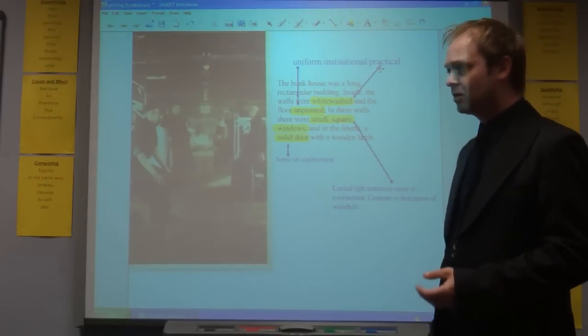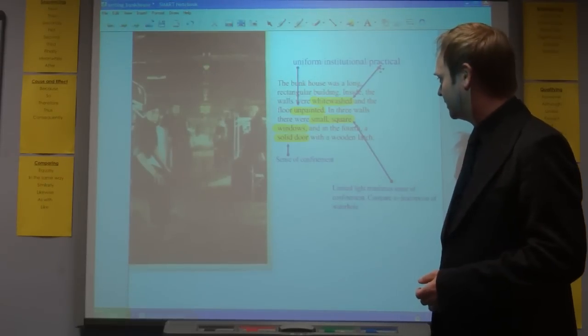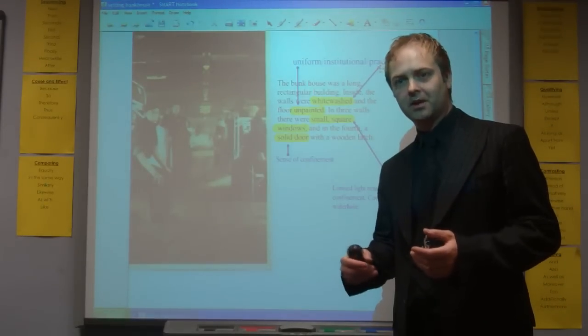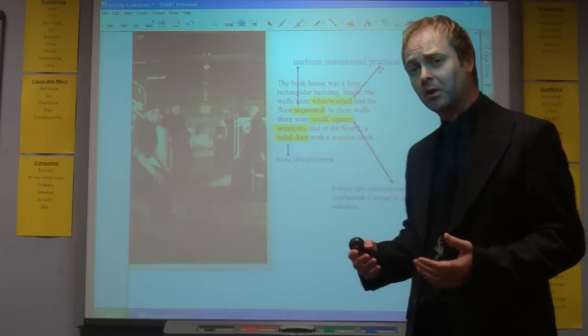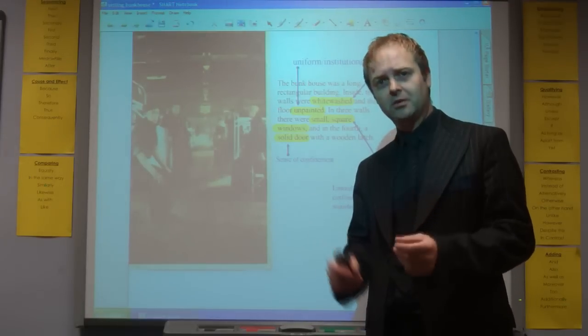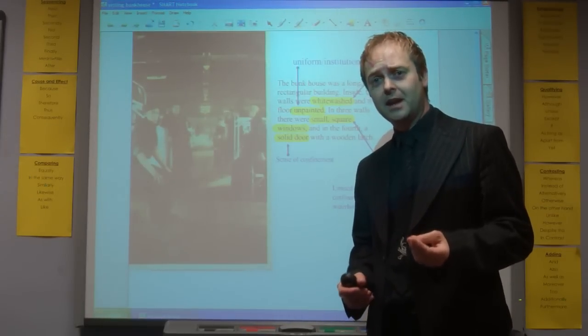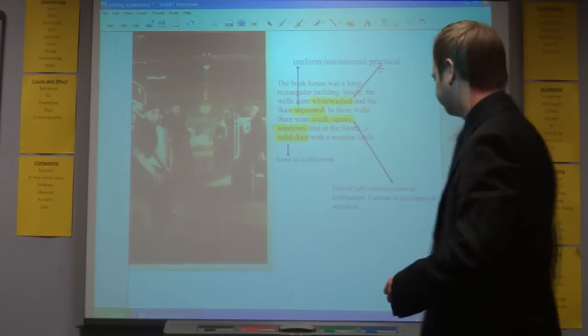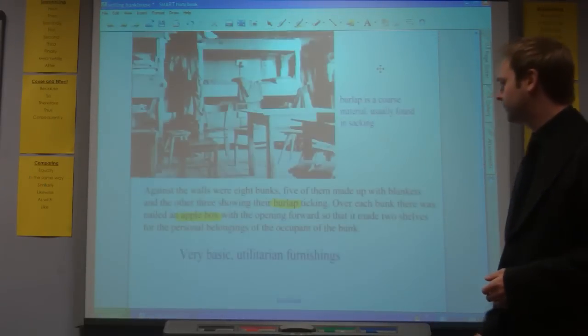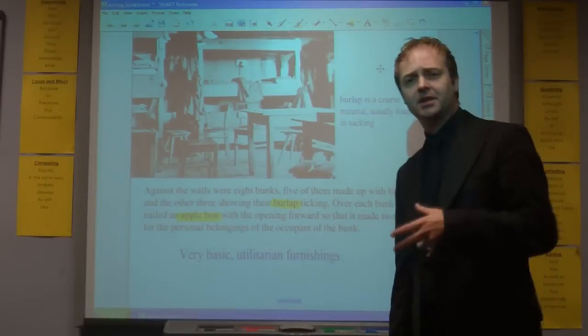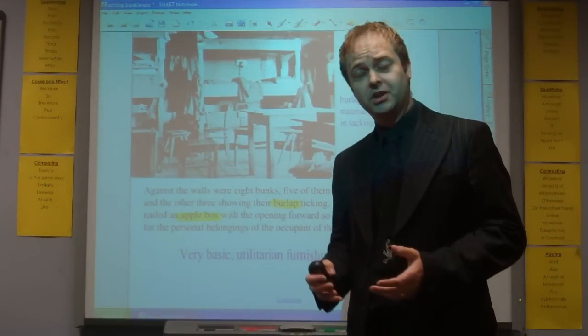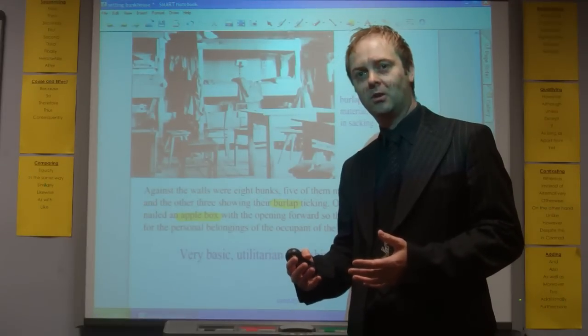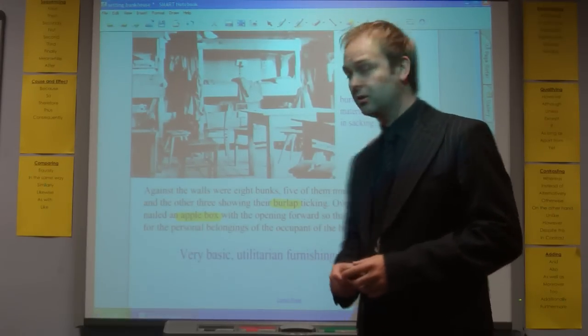In three walls there are small square windows. And in the fourth, a solid door with a wooden latch. In terms of the luxury afforded the people in The Bunk House, it's very limited. Small windows letting in very little light, and the solid door gives that sense of confinement, that sense of imprisonment. It's worth bearing in mind the comparison with the waterhole in chapter one. Whereas we had lots of light, lots of colour in the waterhole, here limited light and very limited colour.